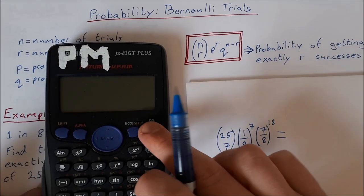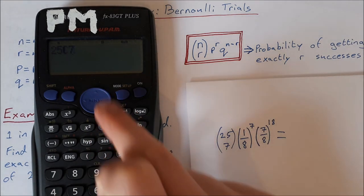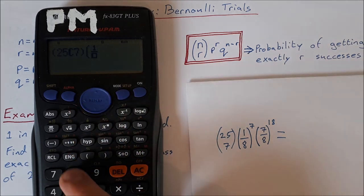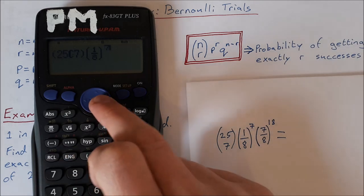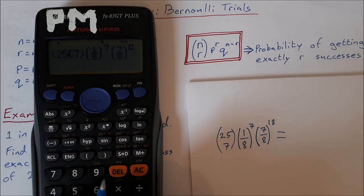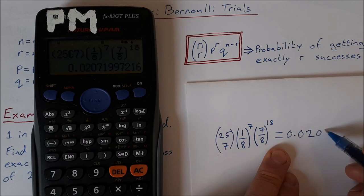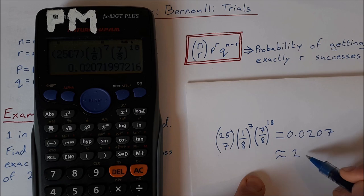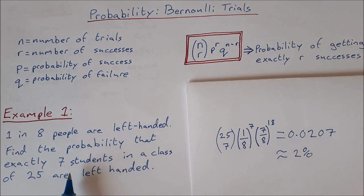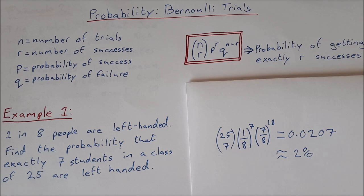So what's that equal to? We get our calculator. So 25 choose 7, I'm going to put that in brackets because I'm multiplying everything, times 1 over 8, and that's to the power of 7, and then times 7 over 8, and that to the power of 18, equals 0.0207. So that's approximately equal to 2%. So the probability of picking seven students in a class, or sorry, the probability of seven students in a class being left-handed is around about 2%.